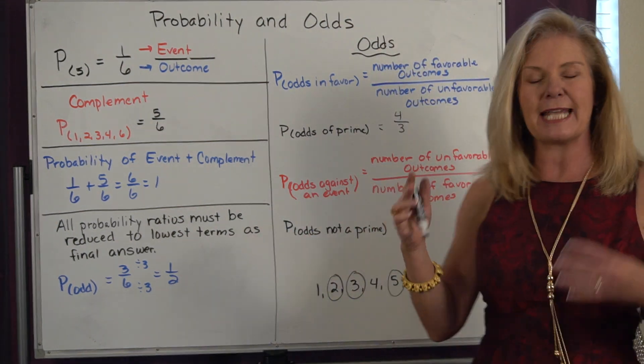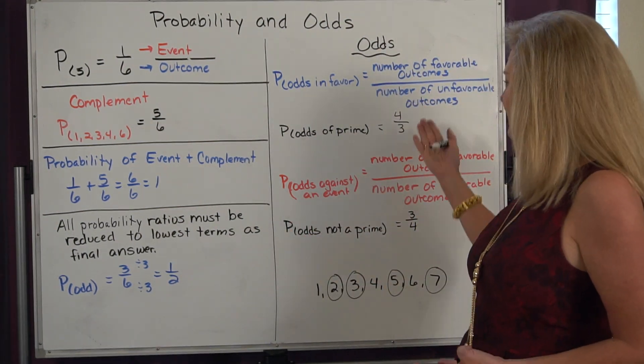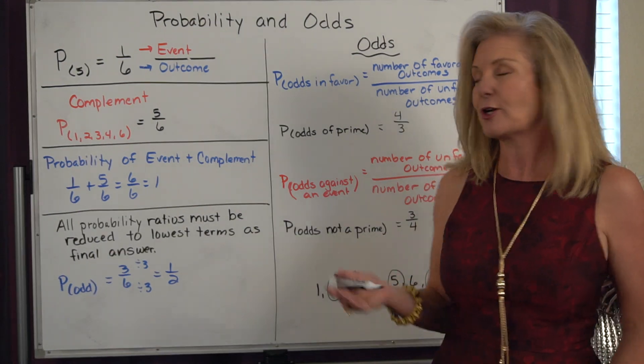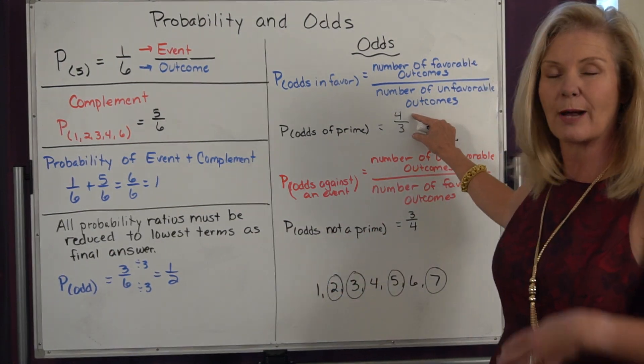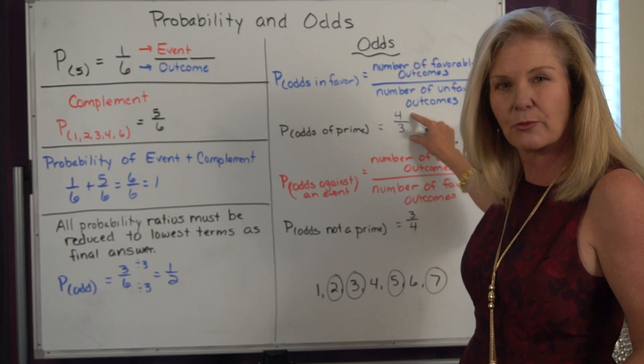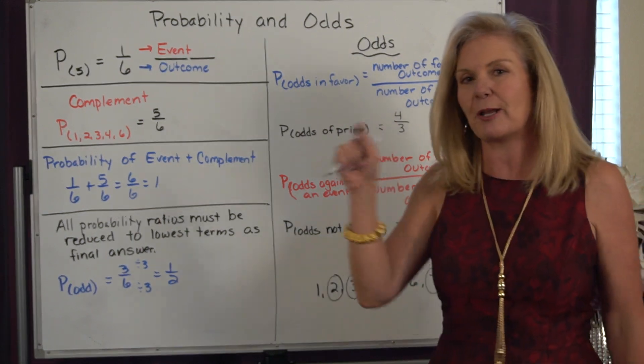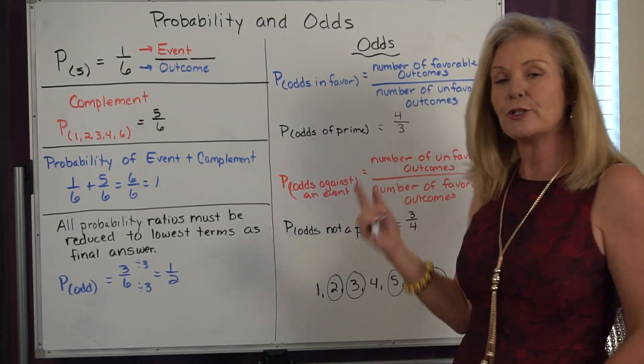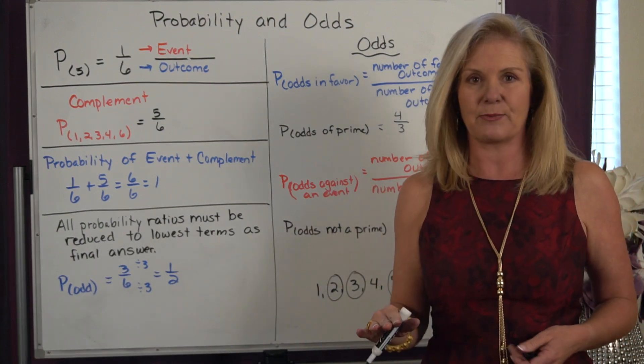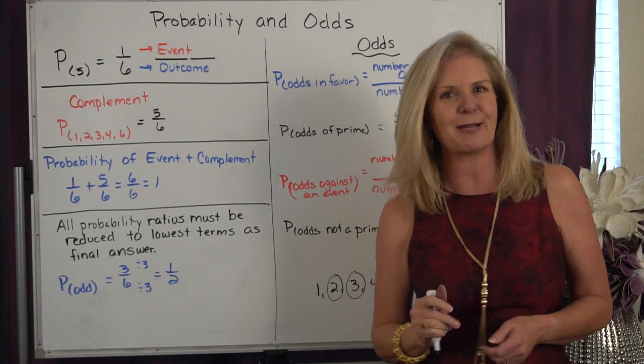So again when we're taking a look at odds, we always have to reduce to lowest terms. But remember these are not improper fractions because these are ratios, so it's okay to have a bigger number on top than on bottom. But if we can reduce it to lowest terms, that's what we need to do. The challenge is up to you, let's get to work on some probability and odds.